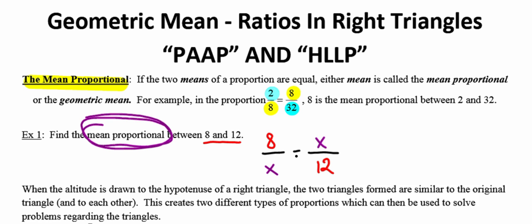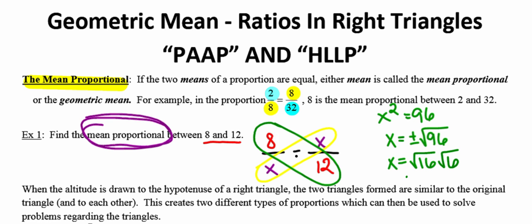So now I'm going to cross multiply. When I cross multiply going in one direction, I get x squared. Cross multiply going in the other direction, 8 times 12, I get 96. Which means x can either be the positive or the negative square root of 96. When we talk mean proportional, it's always a positive number, so we reject the negative root. I know that 16 will go into 96 six times, making that mean proportional 4 square roots of 6. And just like we've always done, we're going to leave our answer in simplest radical form.